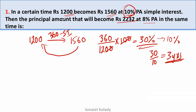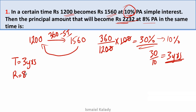The second condition: the principal amount that becomes Rs. 2232 at 8% per annum in the same time. We have already determined that time is 3 years. That is the first condition. In the same condition, the rate is equal to 8% and the amount is Rs. 2232.